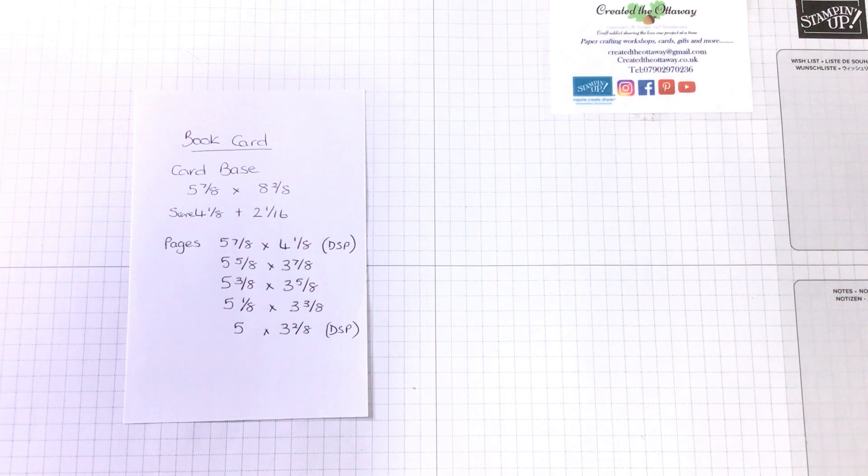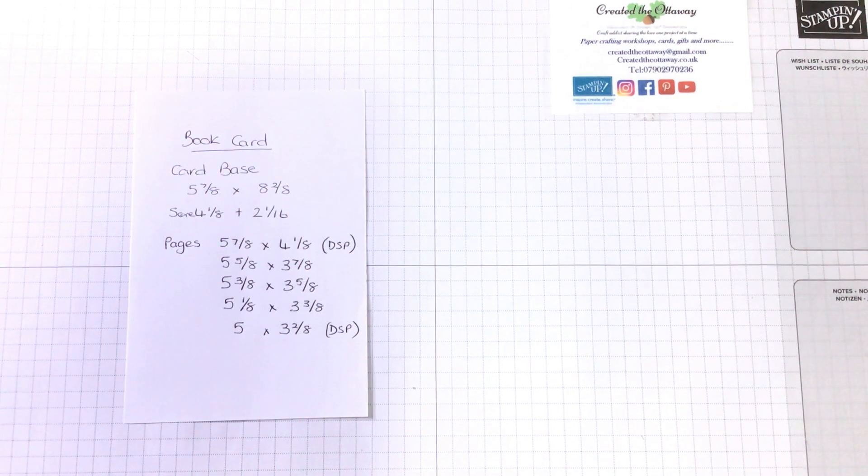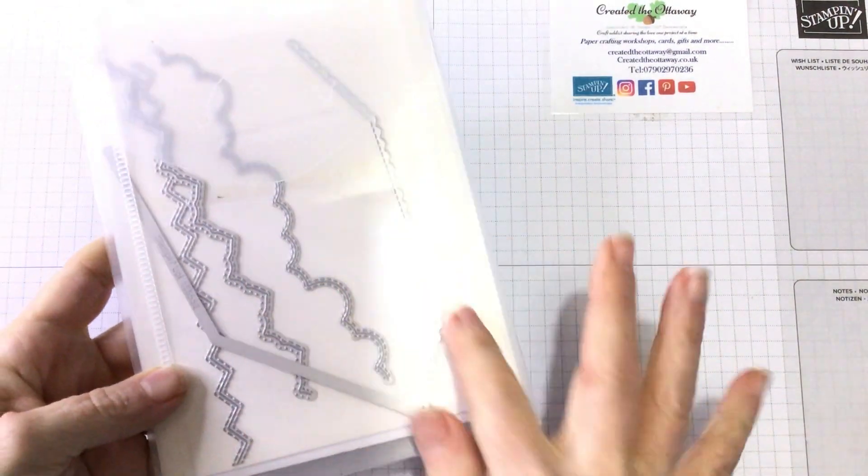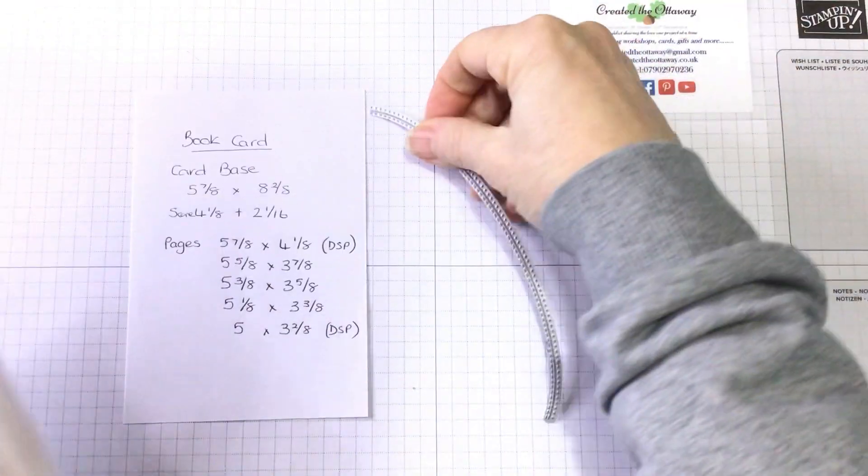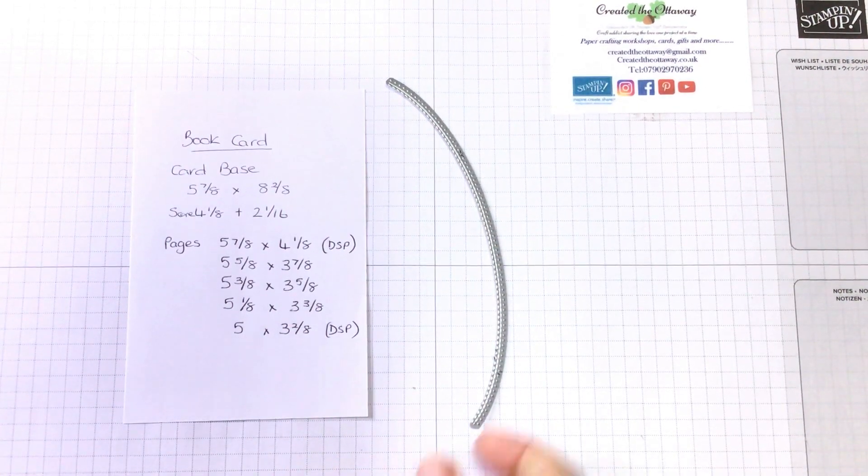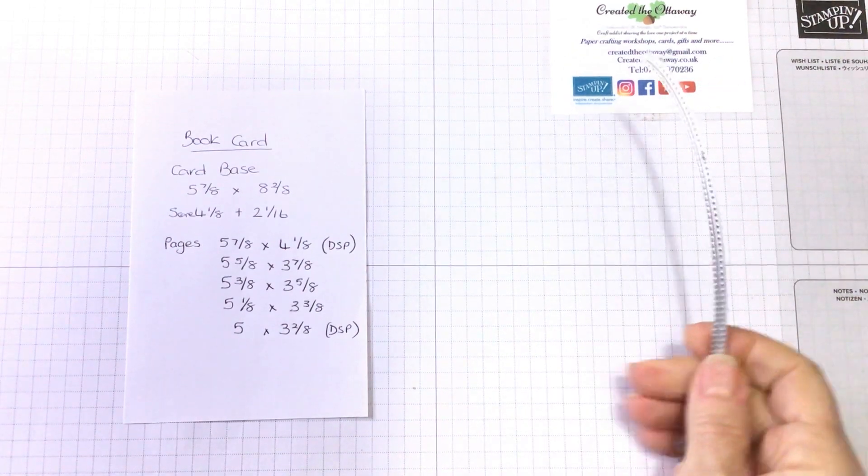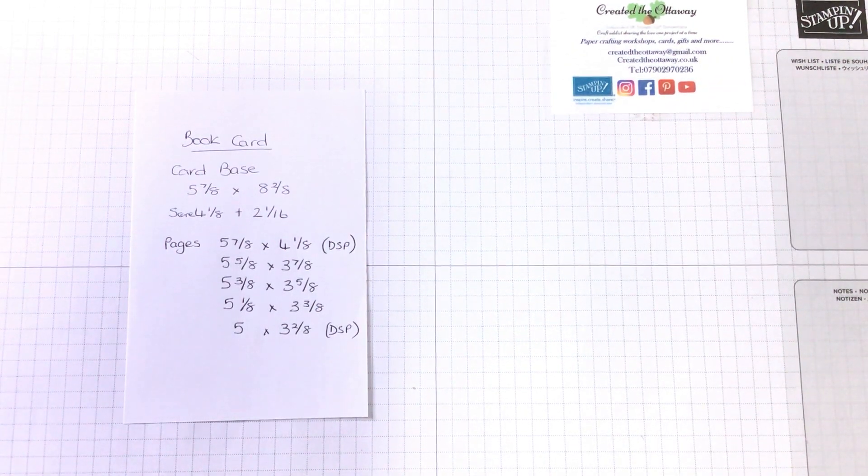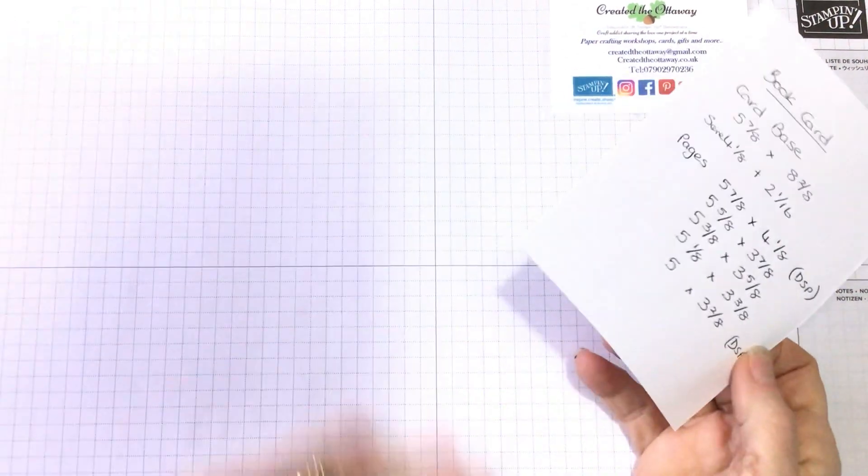I've also used one of the dies from the basic border dies from Stampin' Up. So you know this one that you get all these different ones in. Well, we're going to be using that die. And I think that's it. It's really just a few different makes. And then you can make it your own.